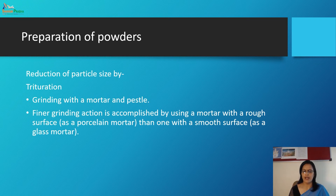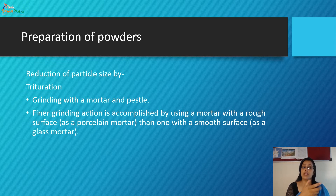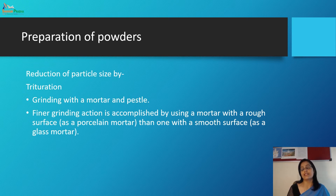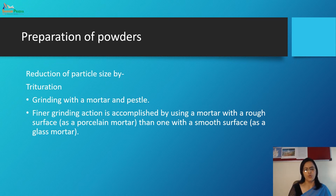The final grinding action is accomplished using a mortar with a rough surface. This is a very traditional method called trituration. You might have seen it in dispensing pharmacies, sometimes also when preparing tablet dosage forms for children — they grind the tablet to get a powder form so that kids can easily swallow it or dissolve it in a suitable liquid.